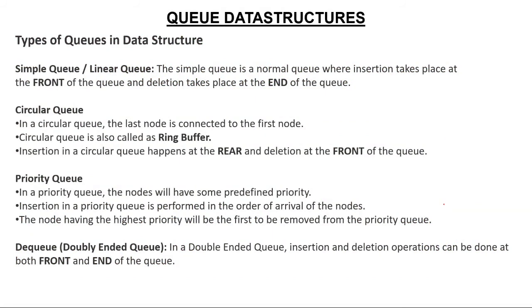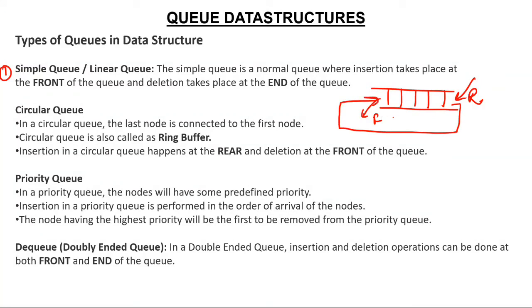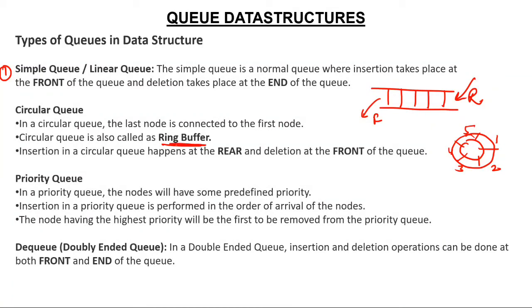Types of Queue in data structure: The first is the simple queue or linear queue — a straight array where elements are deleted from front and inserted from rear. The second is the circular queue — where after the last element you come back to the first element. In a circular queue, elements one, two, three, four, five loop back to one; the last node is connected to the first node. Circular queue is also called a ring buffer. Insertion is from rear and deletion from front.